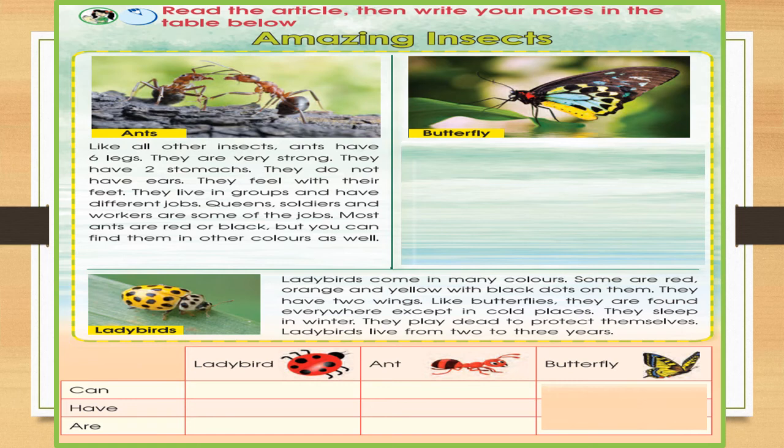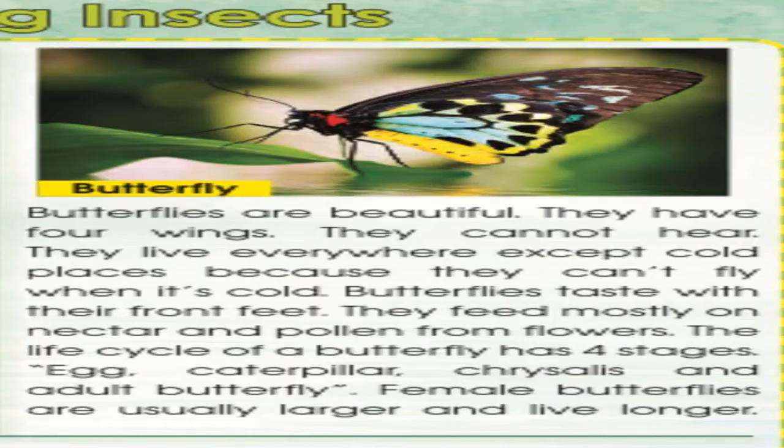Ladybirds have two wings like butterflies. They are found everywhere except in cold places. They sleep in winter and play dead to protect themselves. Butterflies are beautiful — they have four wings, they cannot hear, and they live everywhere except cold places.